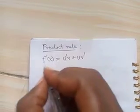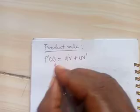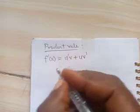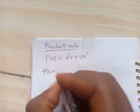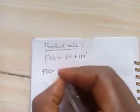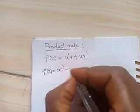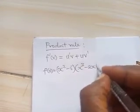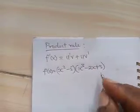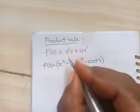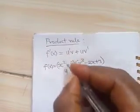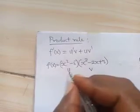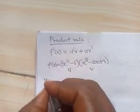Now let's look at a question using the product rule formula. Find the derivative of a given function: f of x equals (x squared minus 5)(x cubed minus 2x plus 3). Here, u is (x squared minus 5) and v is (x cubed minus 2x plus 3). We can now find u prime and v prime.